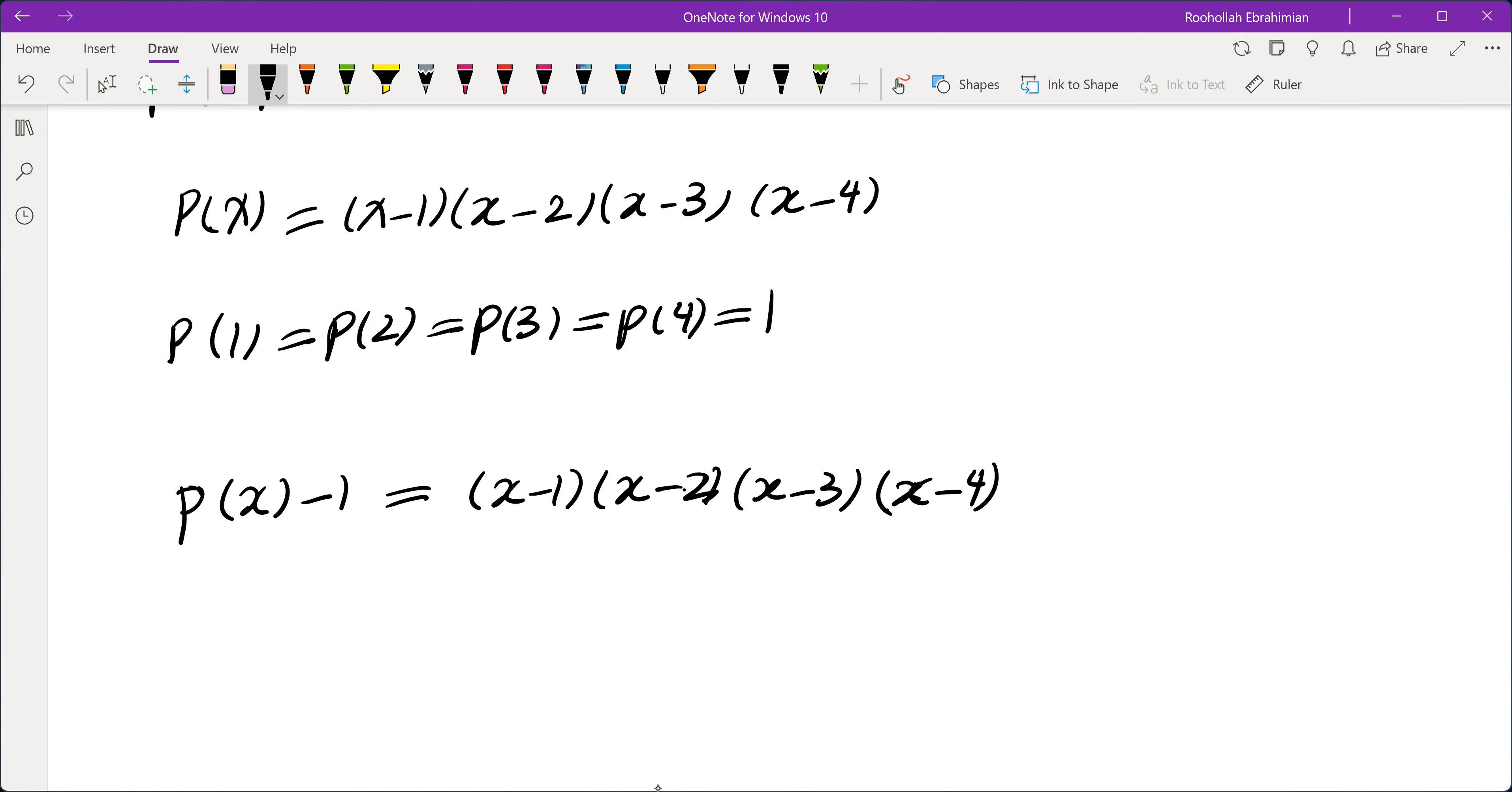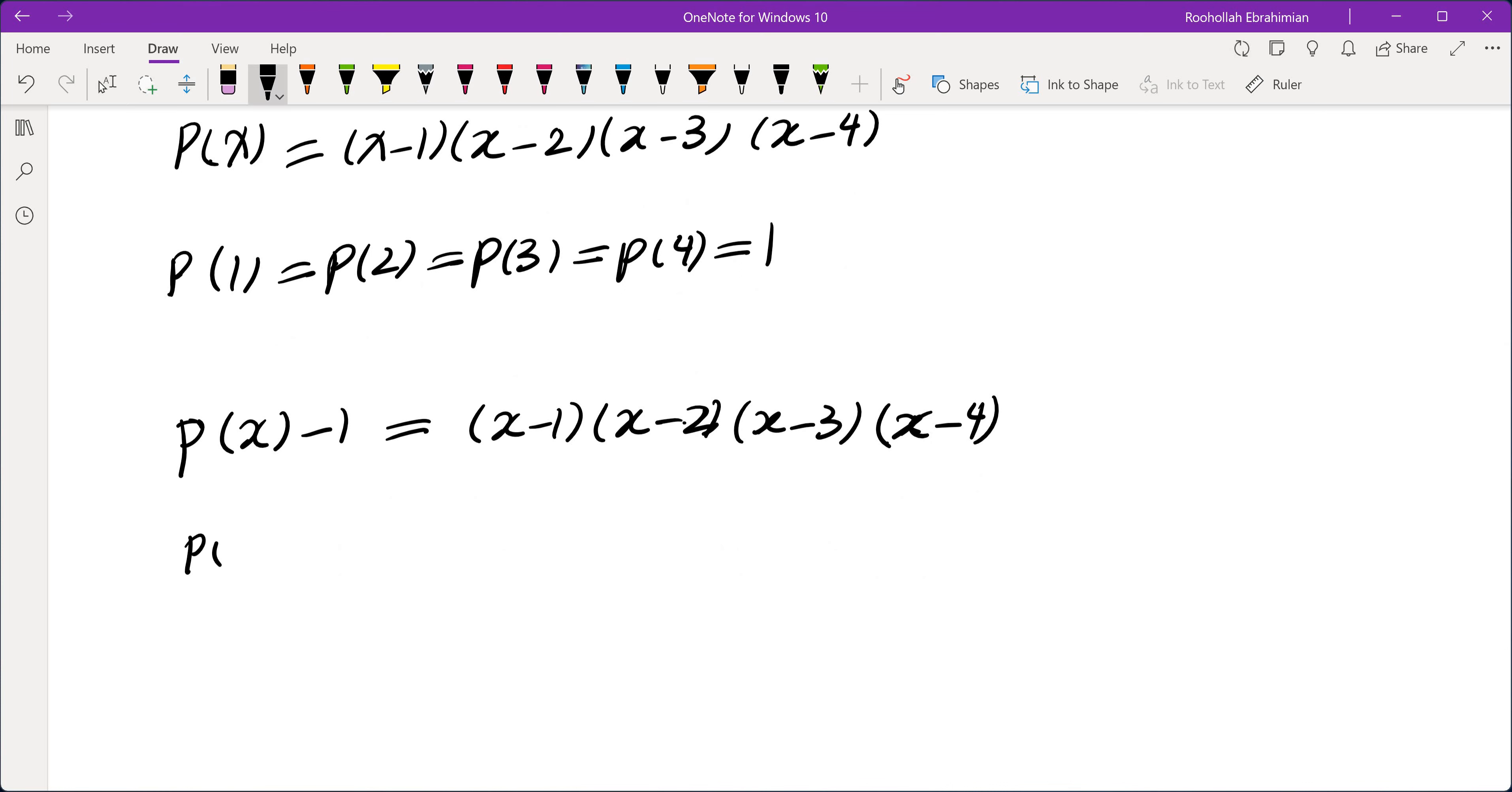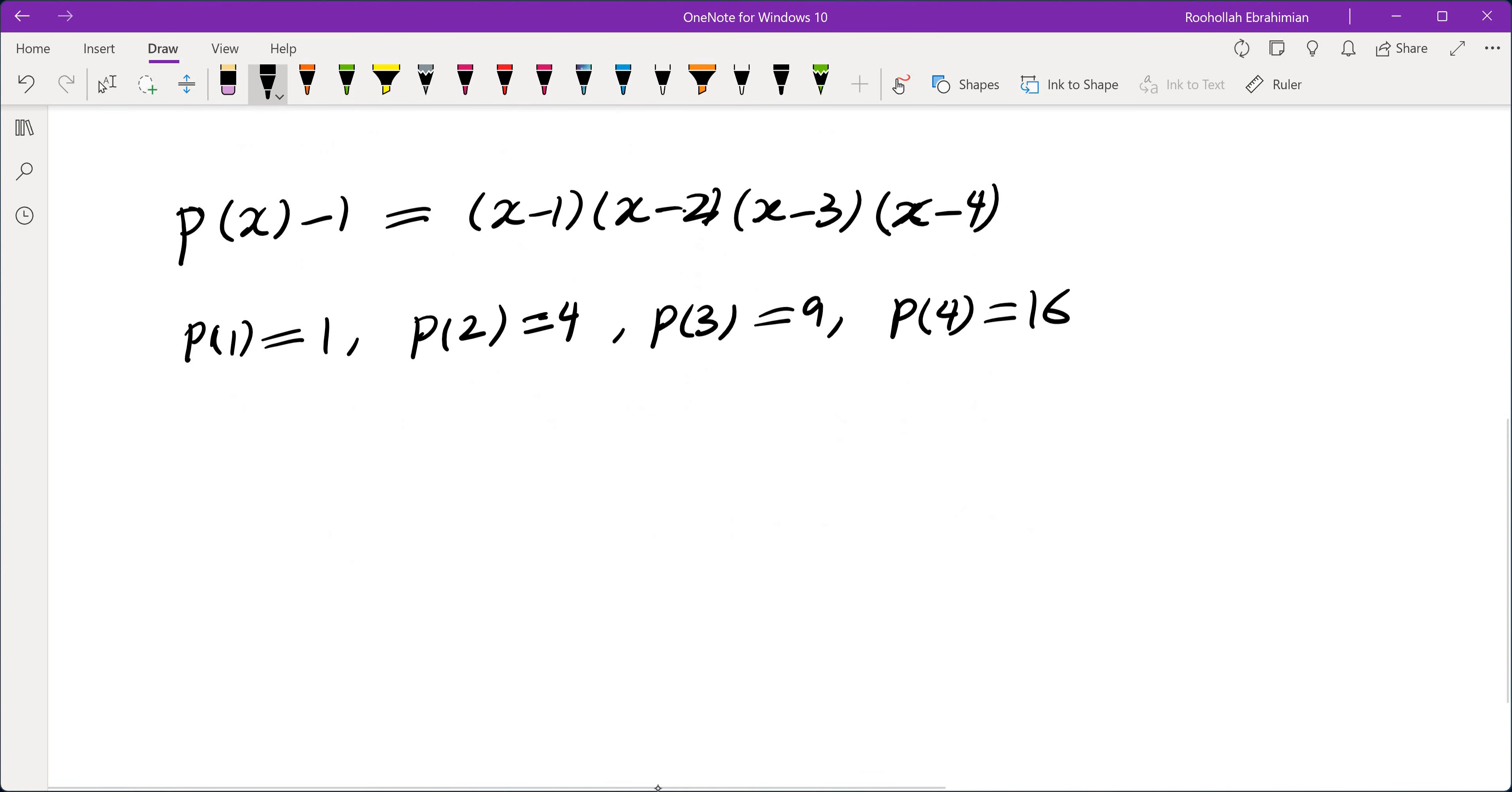None of those two things really happen in this instance because we have p of 1 over x equals x squared. So there are two issues here. One of them is that 1 over x is not a polynomial. The other issue is that that's not a constant. But the second issue is very easily resolvable. Let's assume that you have something like this: p of 1 is 1, p of 2 is 4, p of 3 is 9, and p of 4 is 16.